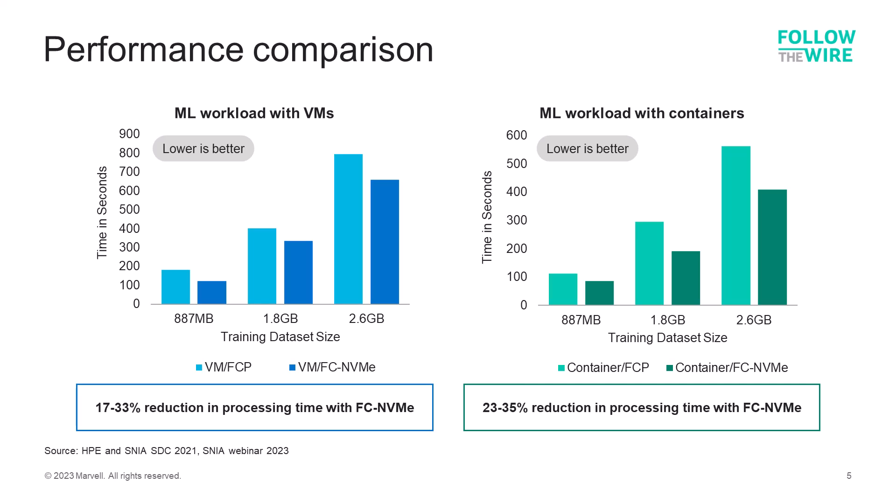Data presented by HPE at the SNIA Storage Developers Conference and in SNIA webinars in 2023 showed performance comparisons of the fiber channel SCSI protocol — FCP — versus FC-NVMe when running machine learning AI workloads. They ran training data sets of different sizes in both VM and container environments with both FCP and FC-NVMe connected storage. For data sets from 887 megabytes to 2.6 gigabytes, the time to process was reduced up to 33% with FC-NVMe and virtual machines, and up to 35% using FC-NVMe and containers. The HPE data also showed that running machine learning workloads using containers is more efficient and higher performance than running with VMs.